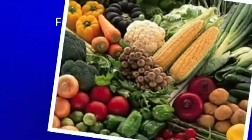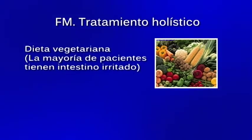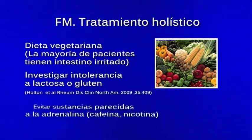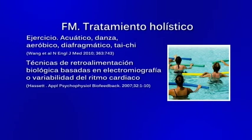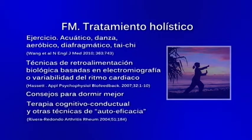Nuestro esquema valida los síntomas: hay que explicarles el papel de la genética y el medio ambiente hostil en el estado de exceso de adrenalina, así como las características neuropáticas del dolor. Hay que armonizar los sistemas adaptativos; esto se puede lograr con grupos de autoayuda que trabajan como sistemas adaptables complejos, junto con una serie de medidas parcialmente efectivas: la dieta, investigar ciertas intolerancias, evitar sustancias parecidas a la adrenalina, cierto tipo de ejercicio y técnicas de retroalimentación biológica. Todo esto armoniza nuestro sistema adaptable complejo.